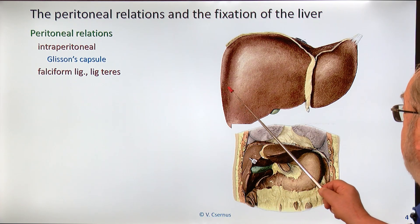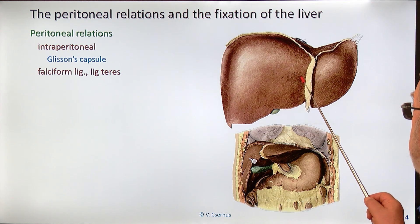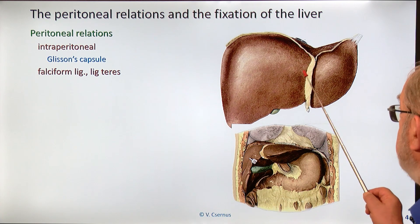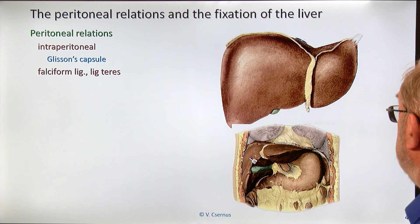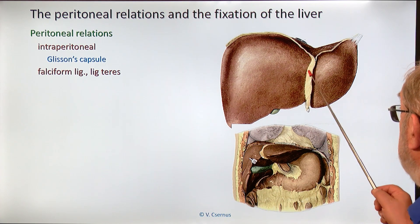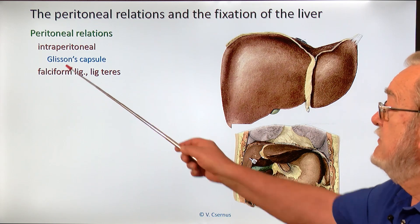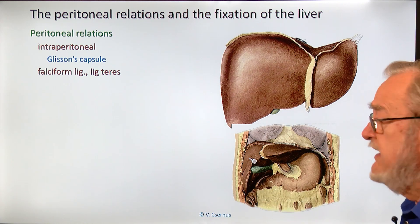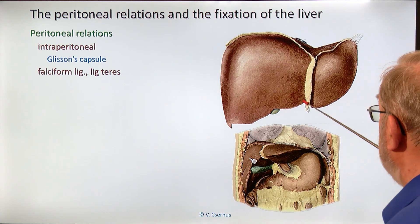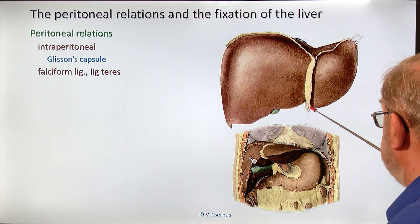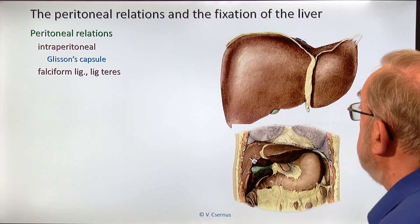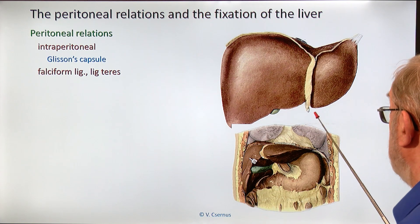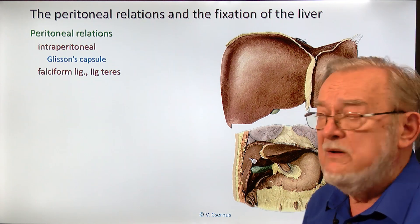If we follow the peritoneum on the right lobe, it turns back to the anterior abdominal wall, making a free double fold of peritoneum. The same happens with the left lobe, and this peritoneal doublet is named the falciform ligament — 'falc' being Latin for sickle, since it is sickle-shaped. On the lower part of this doublet is embedded the ligamentum teres, or round ligament, which is the remnant of the umbilical vein.